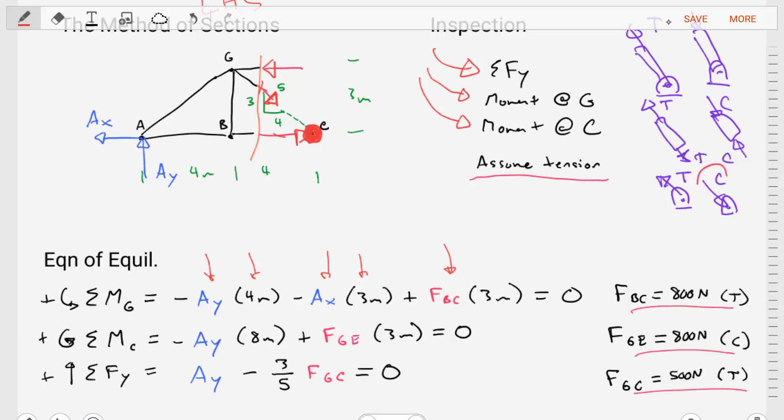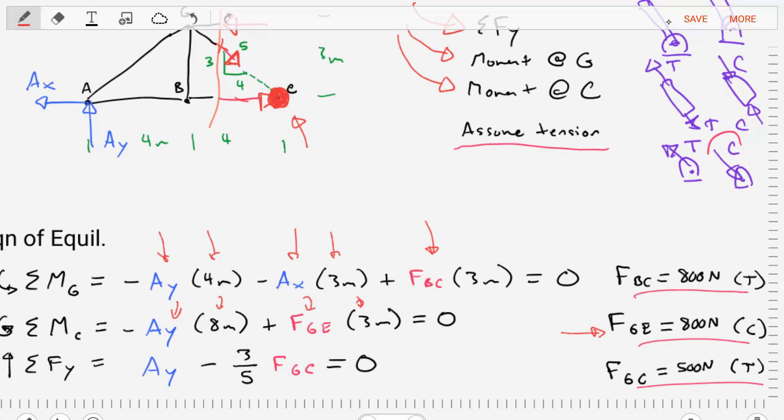We do the next one, the moment about point C. And we're going to do all of the forces and their moment arms involved as well as their senses, and the only unknown is FGE. We find that equal to 800 Newtons compression.